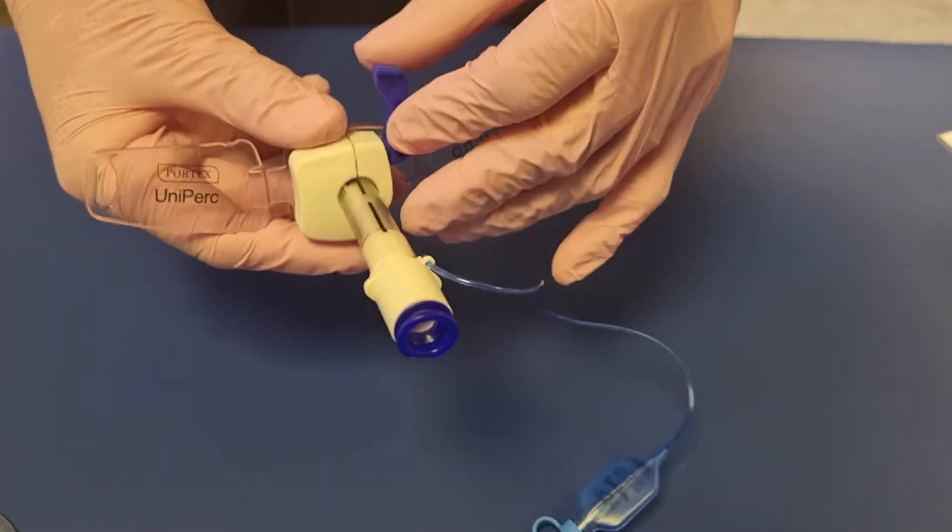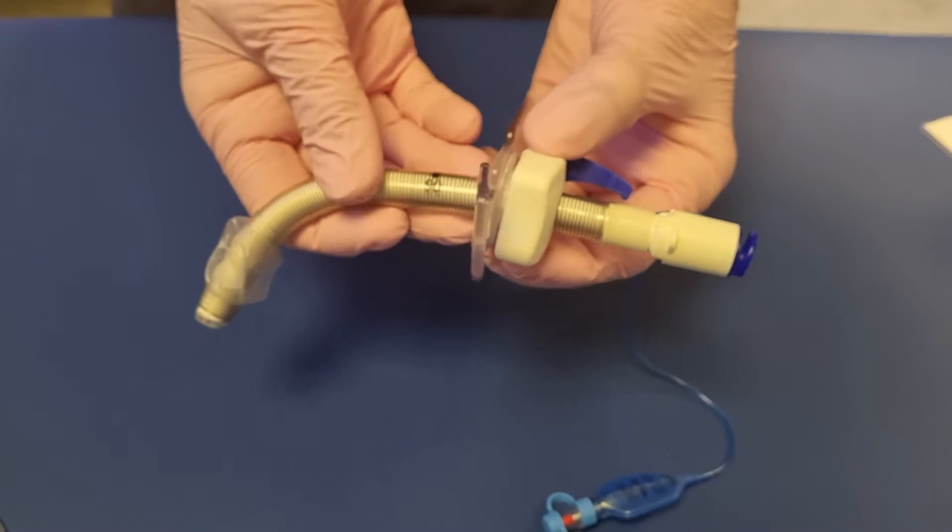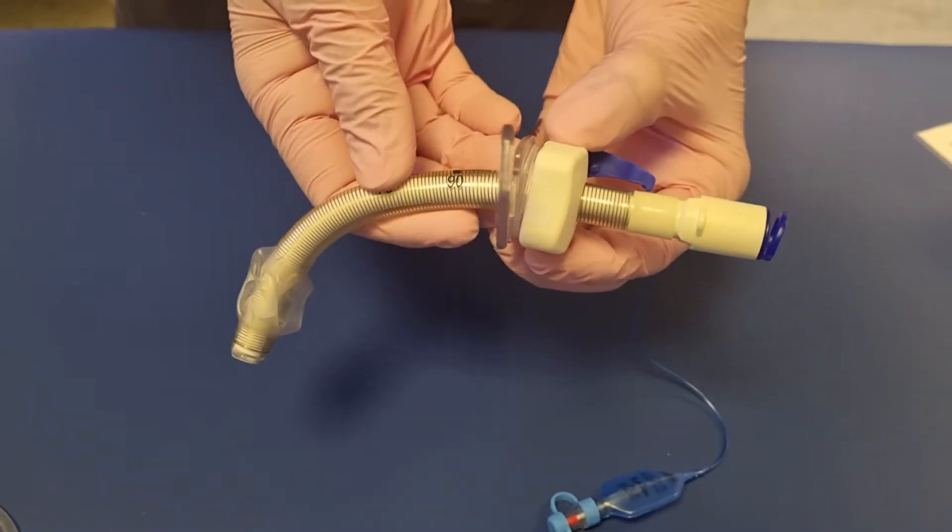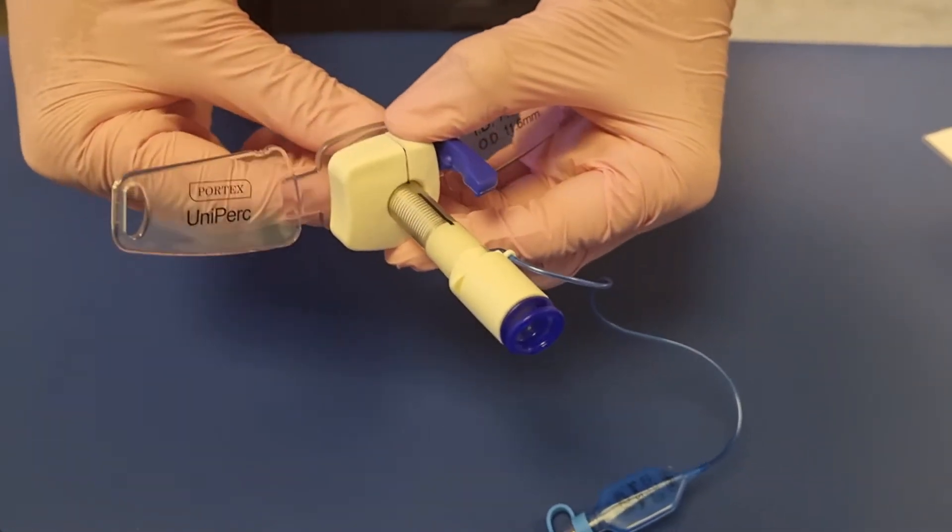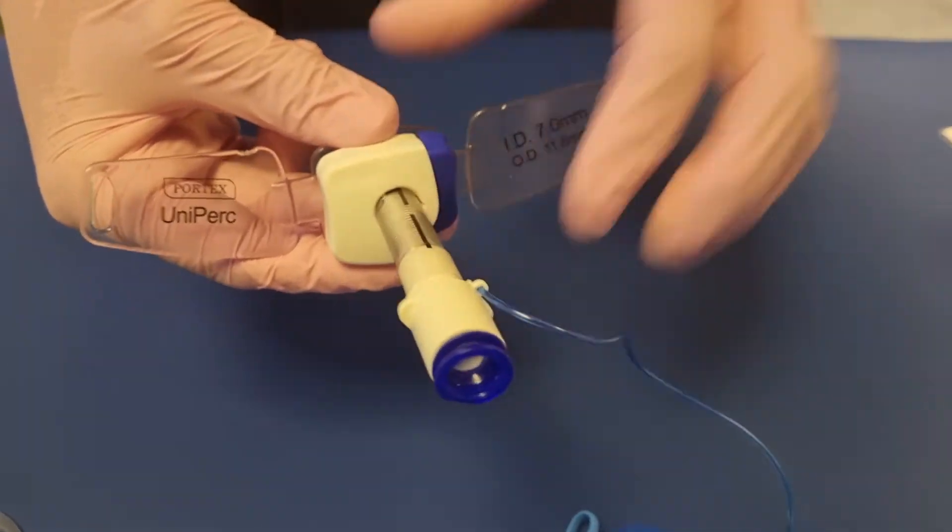The adjustable flange part allows us to make the tube as long as necessary to insert fully into the trachea, and it is then fixed into place with a locking system.